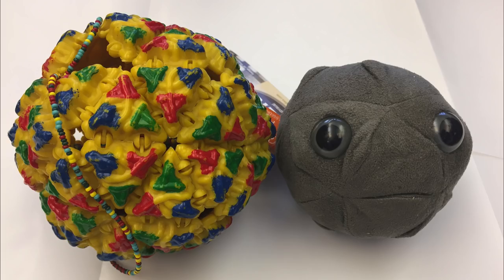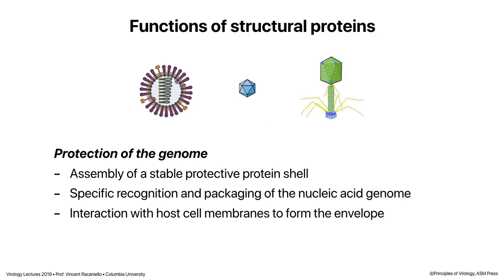Viral proteins — the proteins that make up virus particles — have very specific functions. They have functions to protect the genome, making a shell so that it will protect the genome going from cell to cell and host to host. Remember viroids — little naked RNA molecules that go from plant to plant and don't encode any proteins. We don't consider those viruses. But all the other viruses that infect everything else have a protein shell to protect the genome.